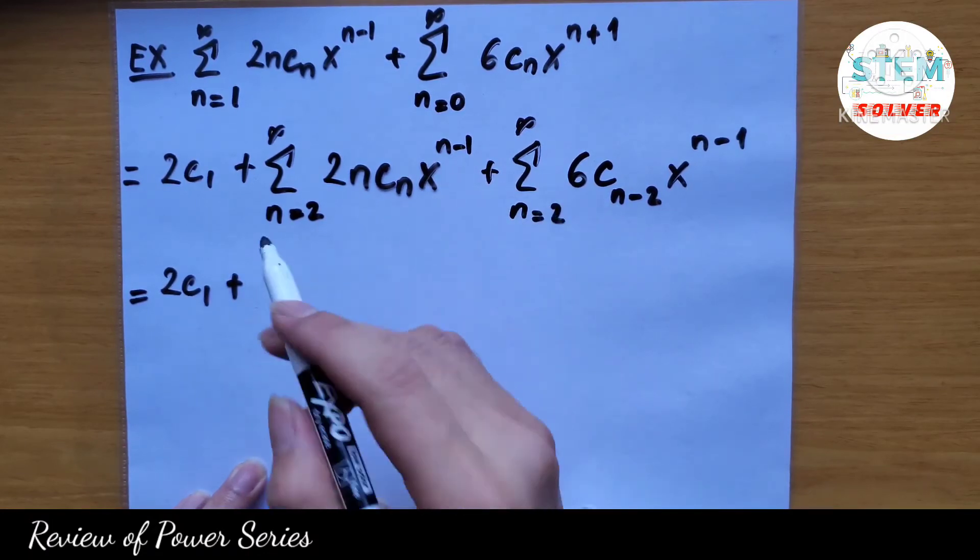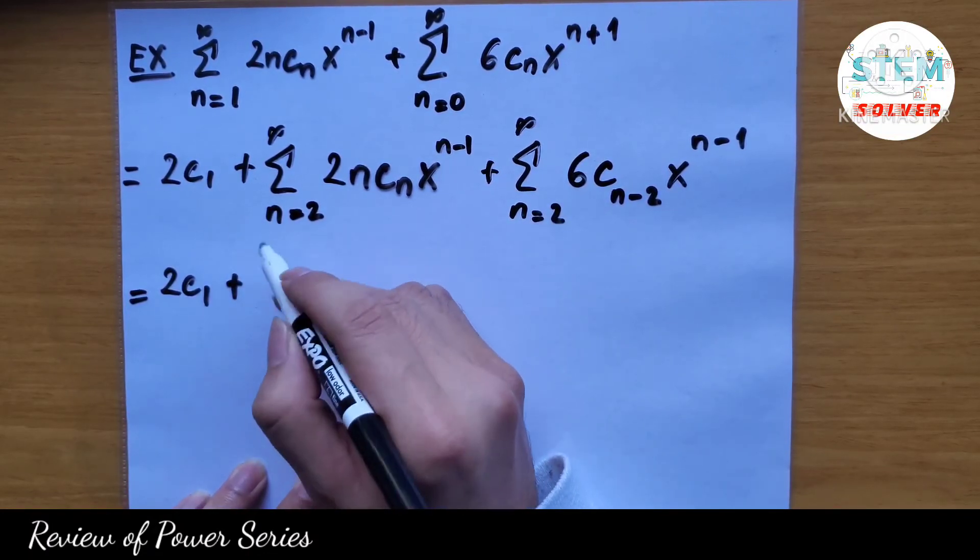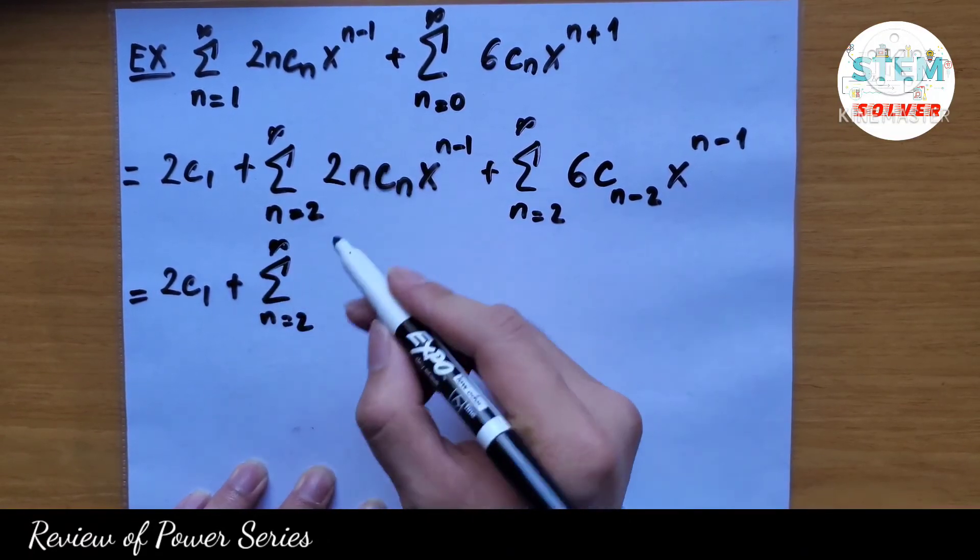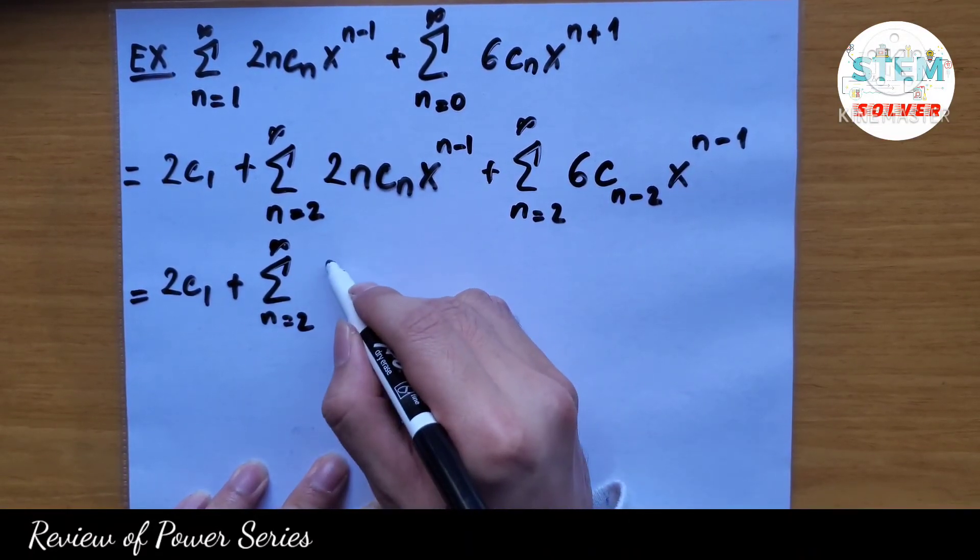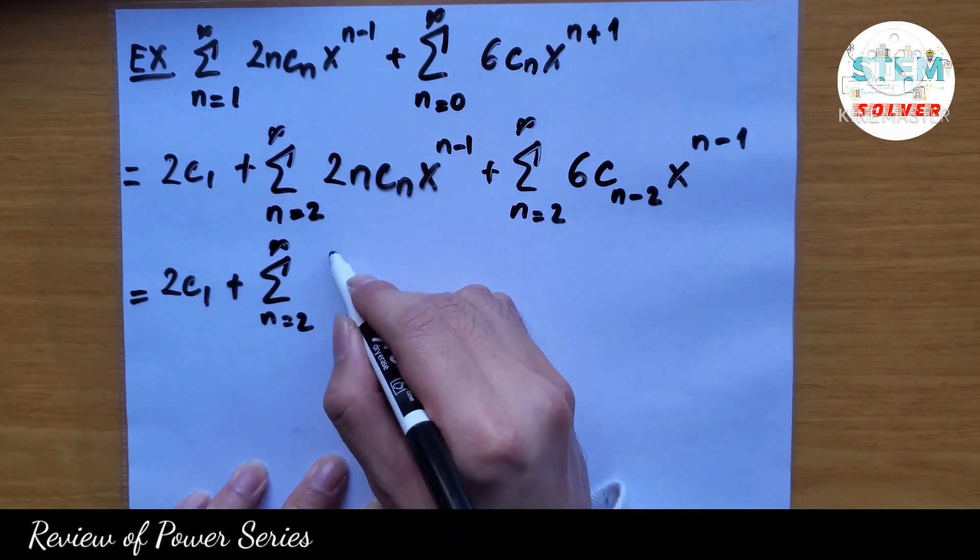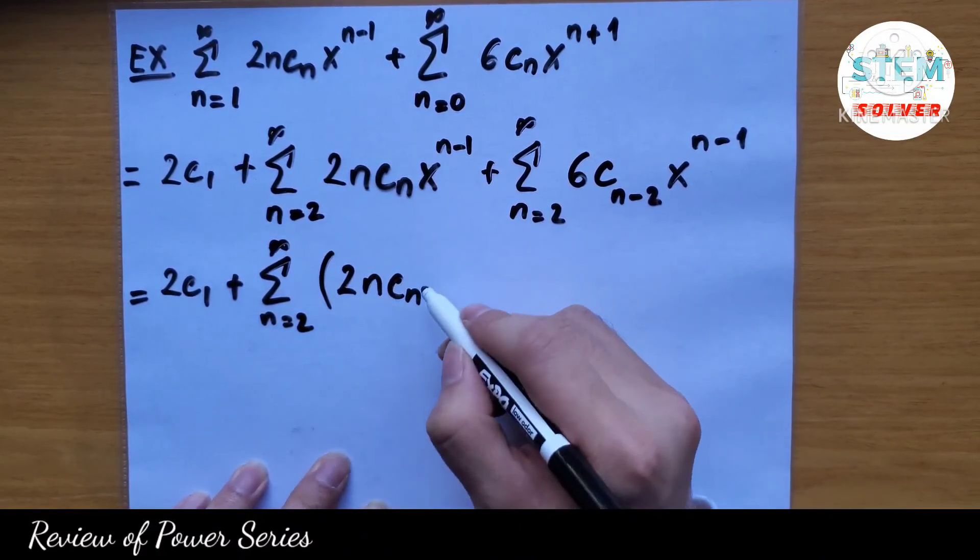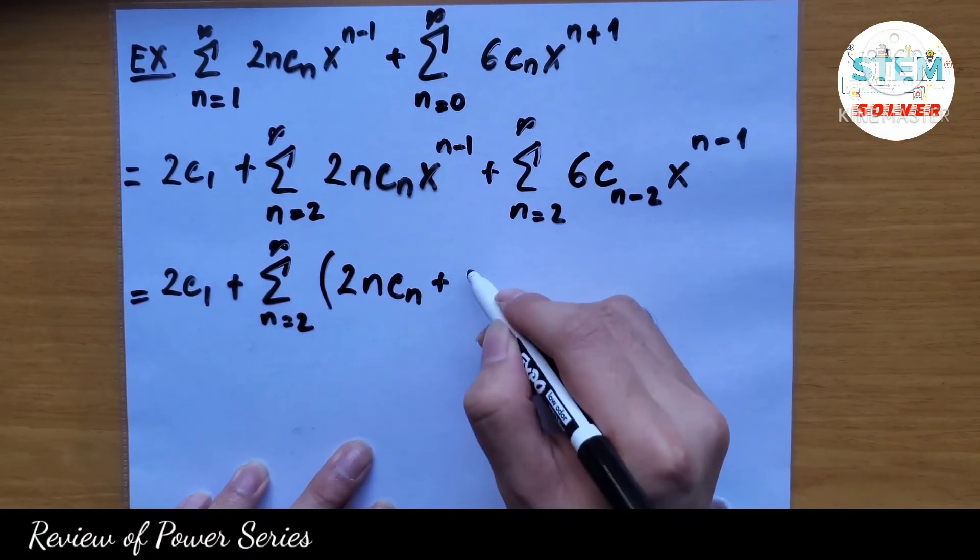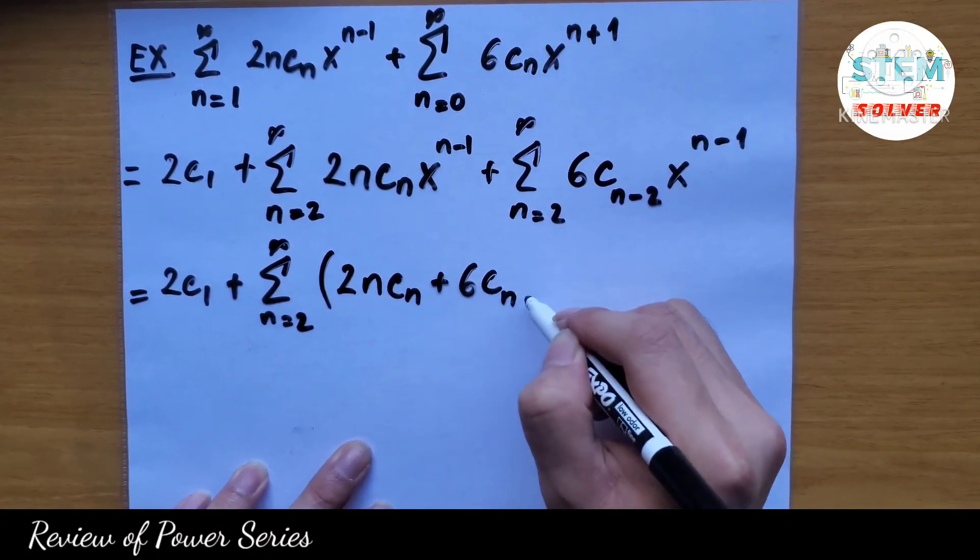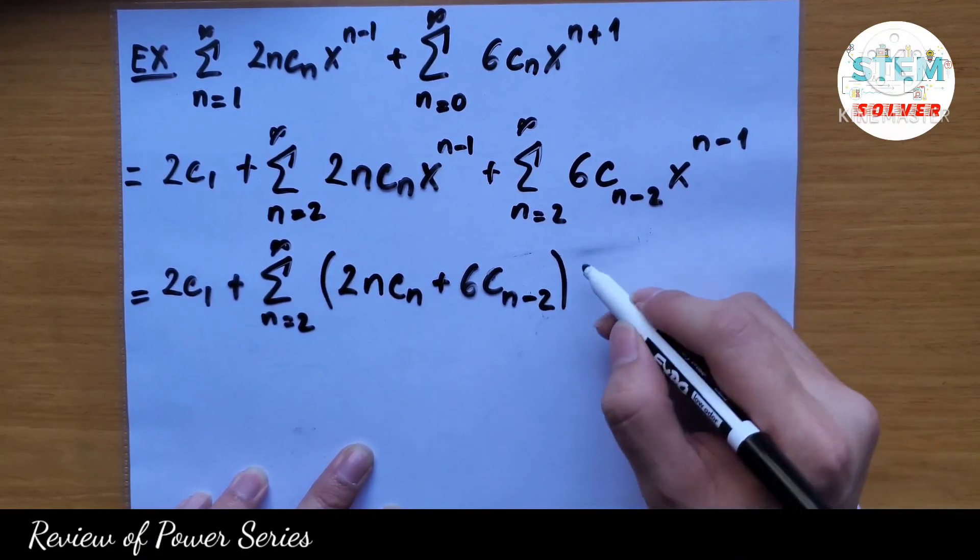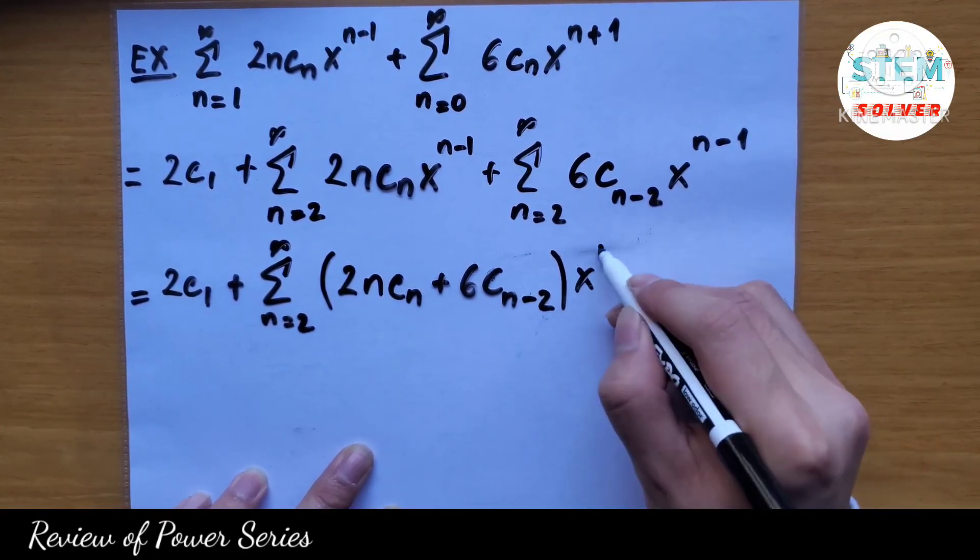Now I'm gonna factor out x to the n minus 1, so I'm gonna have series from n equal 2 to infinity, 2n cn plus 6 cn minus 2, multiplied by x to the n minus 1.